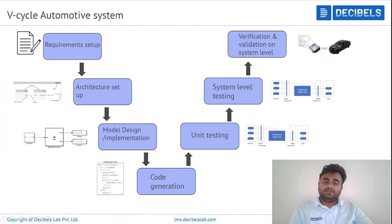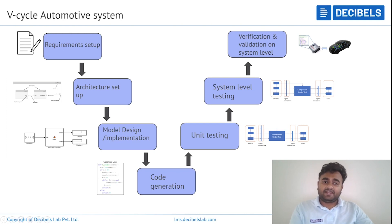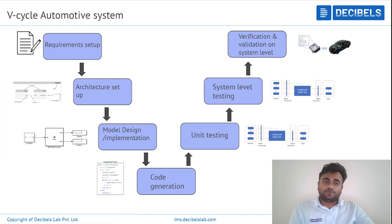This is where unit testing and system-level testing are carried out. Before deploying to hardware, the software part has to be verified and validated at the system layer. Procedures such as MIL, SIL, and HIL testing are carried out to verify and validate the software part of the automotive system.